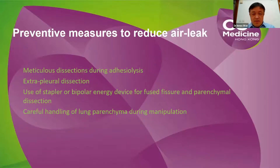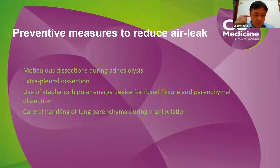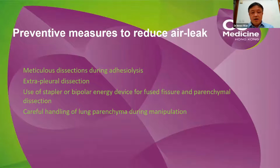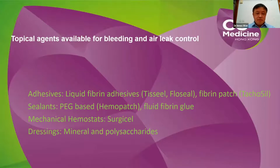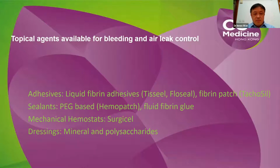Preventive measures to reduce intraoperative air leak include meticulous dissection especially during adhesiolysis, extrapleural dissection in very adherent lung conditions, using a stapler or bipolar energy device during fissure dissection, and gentle handling of lung parenchyma during manipulation. In thoracic surgery, topical agents are used mainly for bleeding control and air leak control, divided into four categories: adhesives such as liquid fibrin adhesives like TachoSil or FloSeal, fibrin patch sealants like the PEG-based HemoPatch, fluid-based fibrin glue, and mechanical hemostats like Surgicel and dressings.